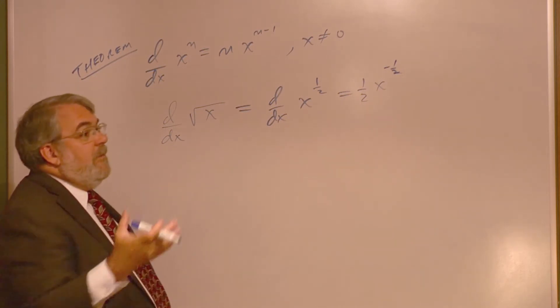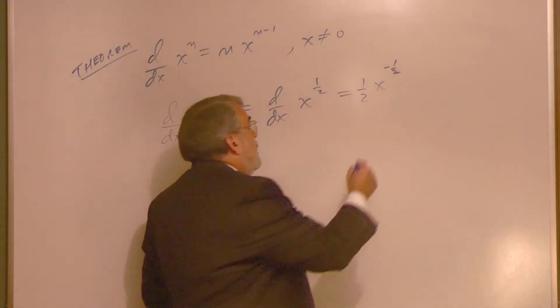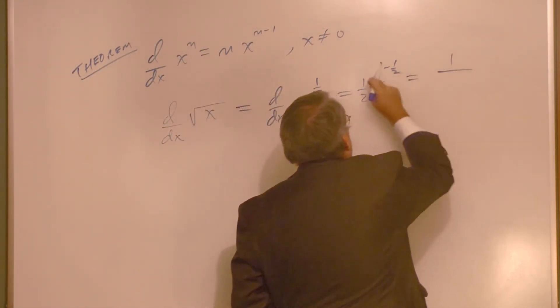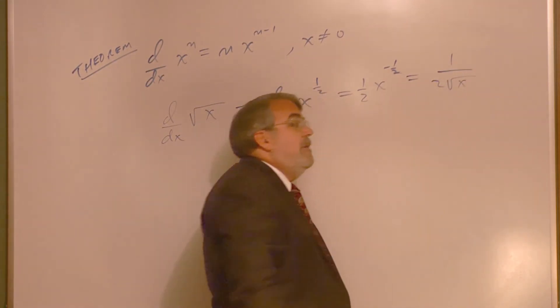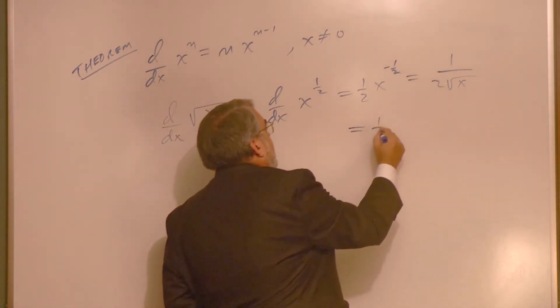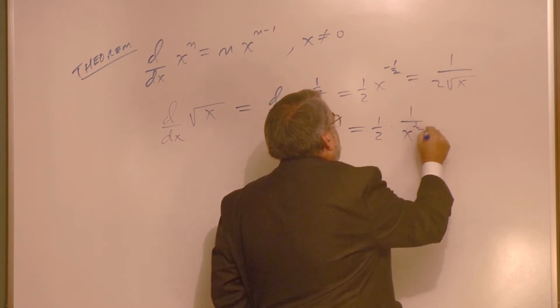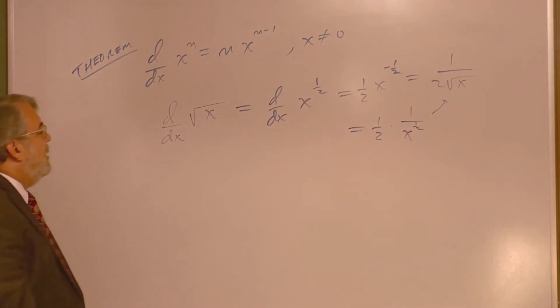And now we probably should put it back into square root form since it started in square root form. Also, this now becomes the denominator, doesn't it? So have 1 on top, 2 square root of x. Let me just show you an extra step here: 1 half times 1 over x to the positive 1 half becomes 1 over 2 times the square root of x.